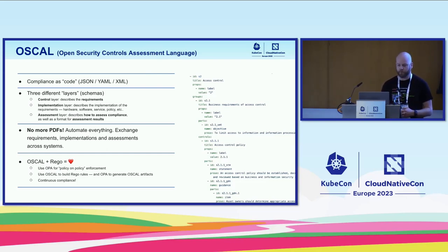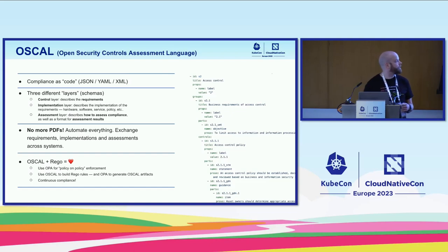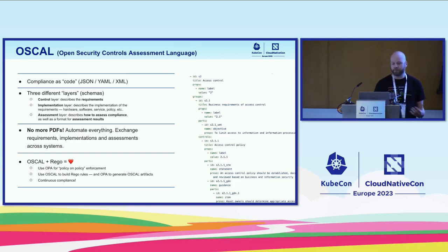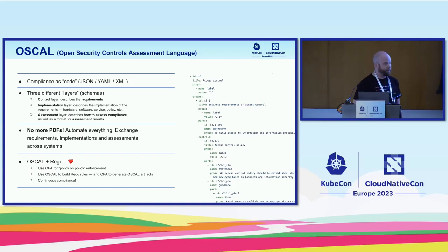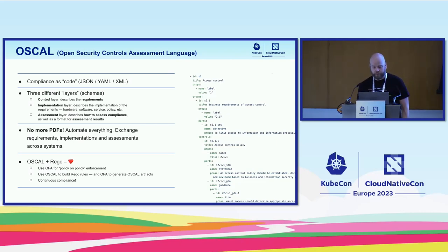We can use OPA and Rego to do policy-on-policy enforcement — checking if your implementation claims to solve something like cryptography in transit or TLS, but OPA can see that you haven't specified any components that actually fulfill that requirement. That would be a policy violation. If OSCAL describes the actual policy, we can use OPA to enforce that. You can also use OSCAL to build Rego rules, translating requirements into actual Rego, and use OPA to generate OSCAL artifacts. This gets us closer to our goal of continuous compliance.